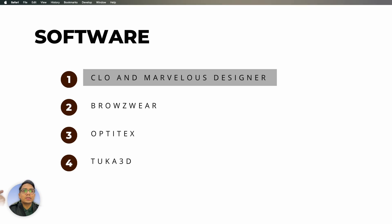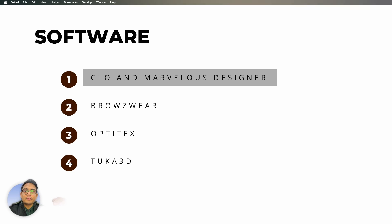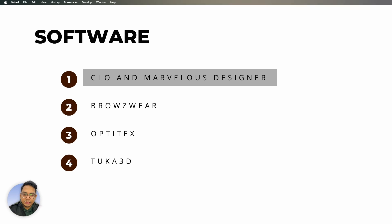The software we use includes CLO, Marvelous Designer, Browzwear, Optitex, and Tukatech — you can use any software. Softwares are just a tool to achieve certain things; they will keep changing. Right now, CLO and Browzwear are the two most prominent. If your concepts are right, you can always change software and learn multiple ones. Don't learn the software — learn the concept via software.